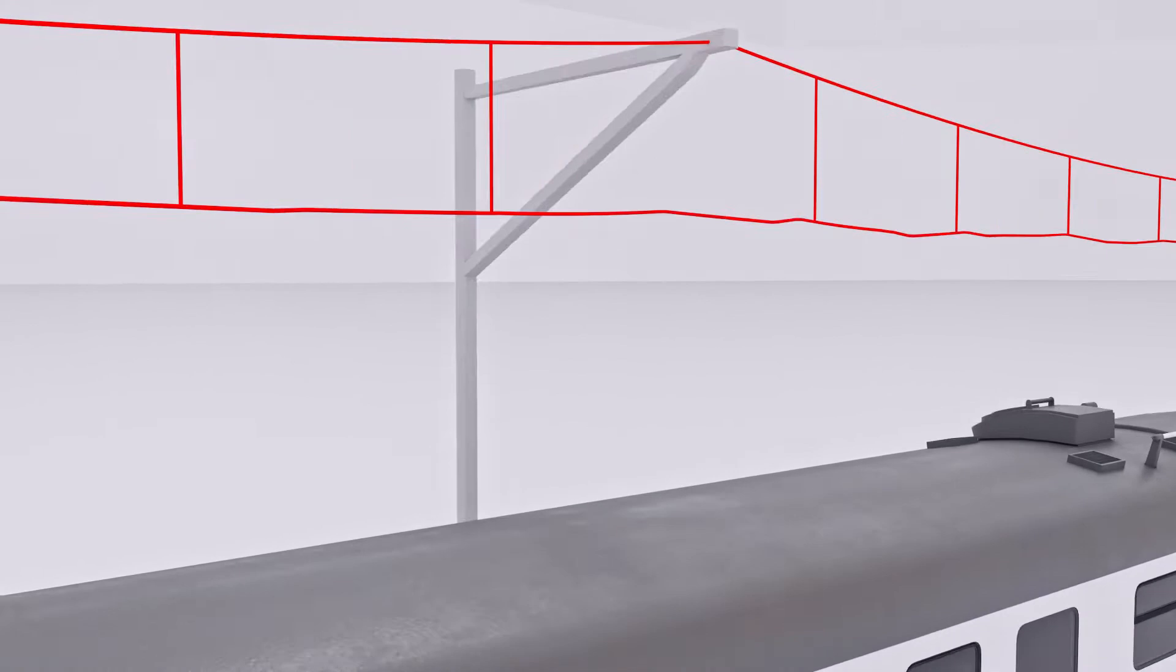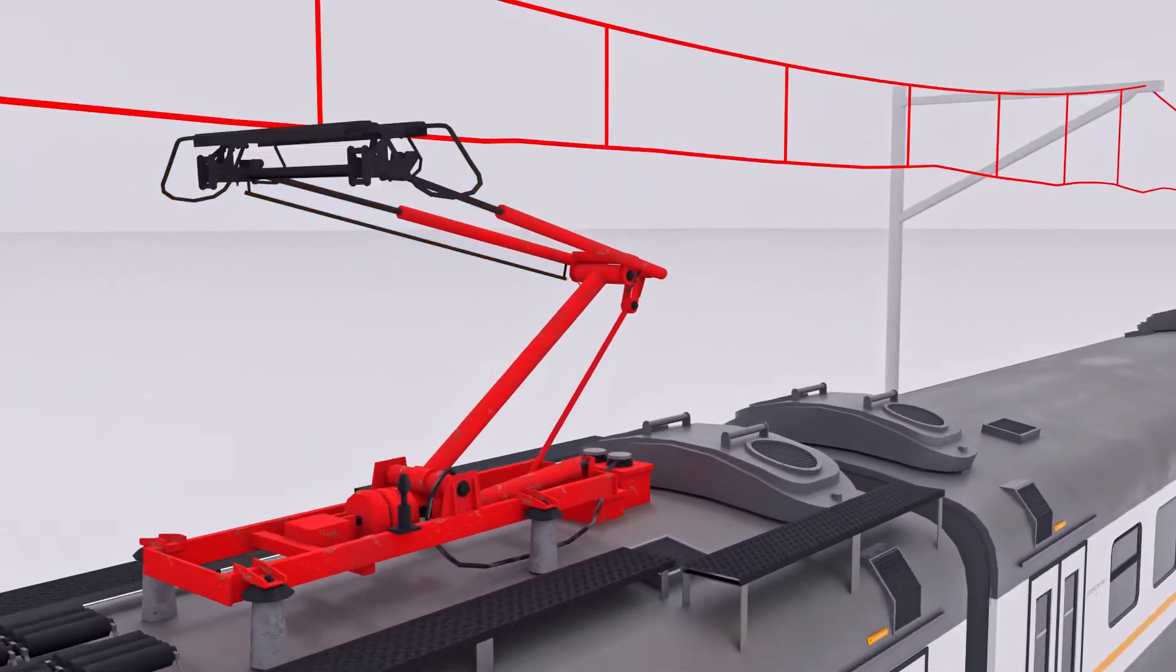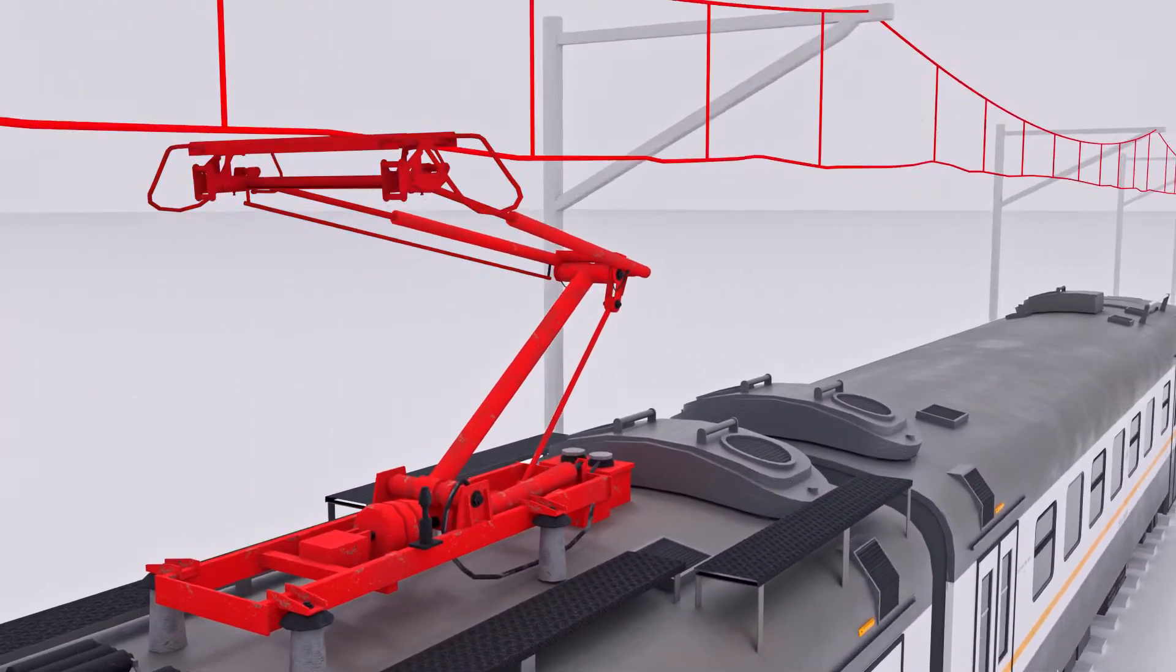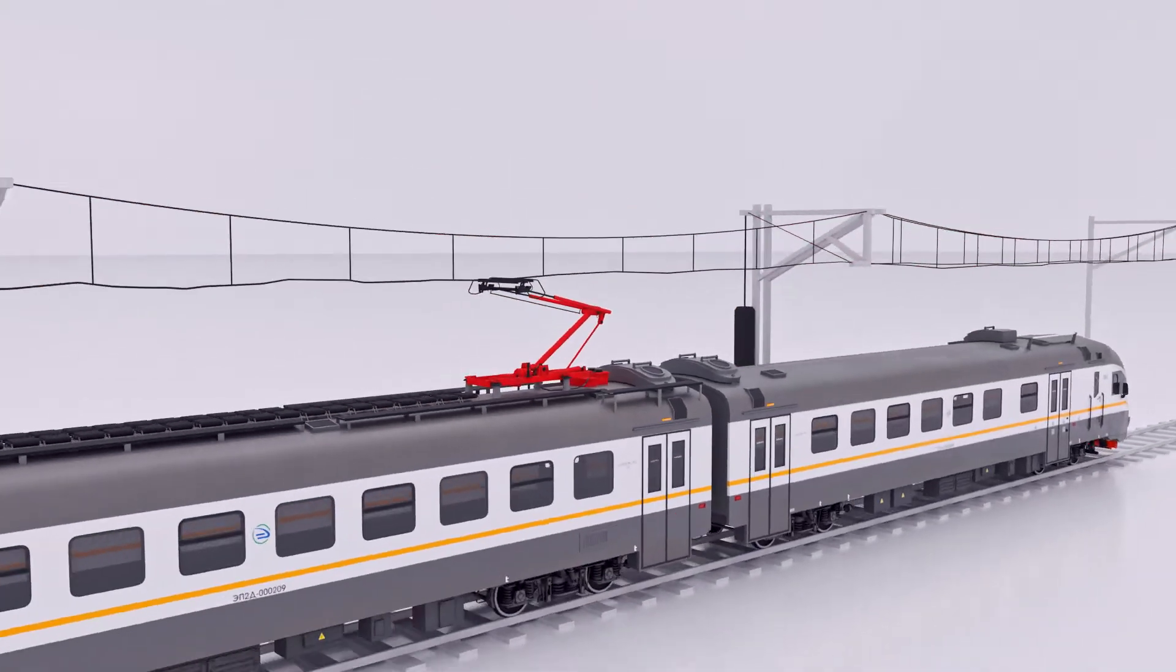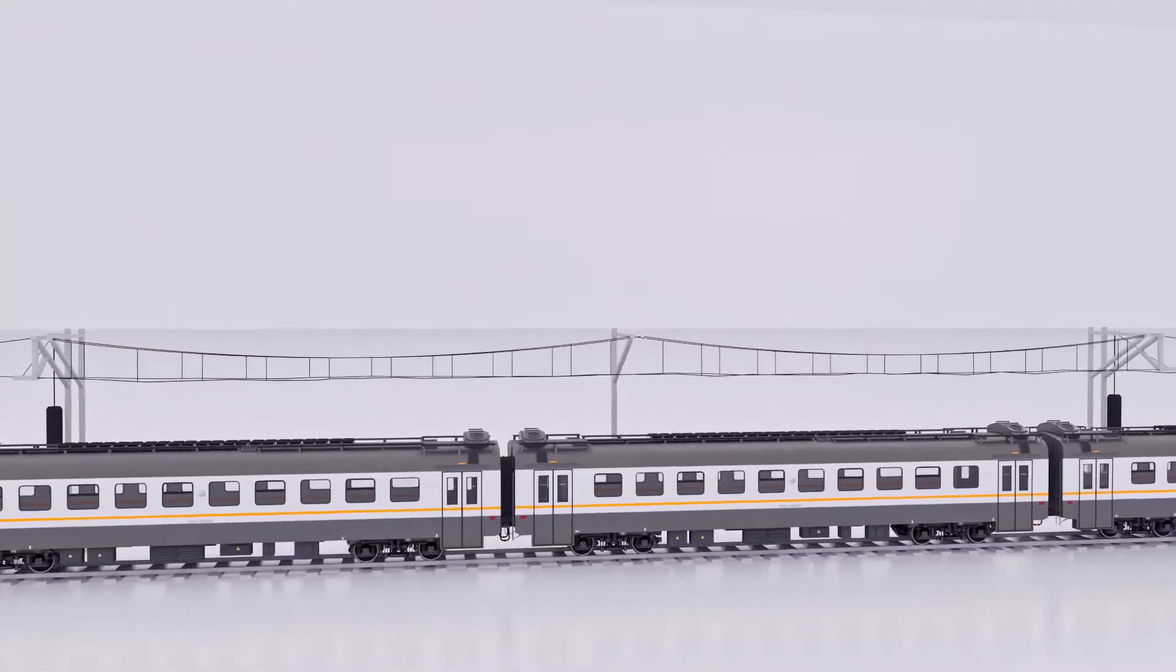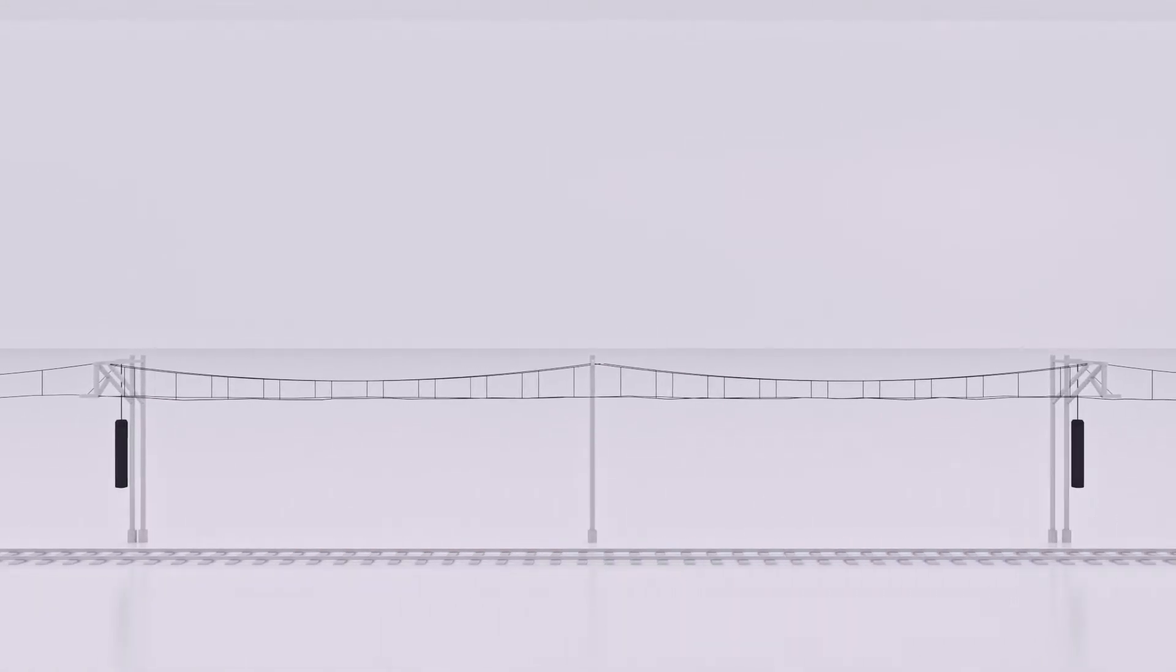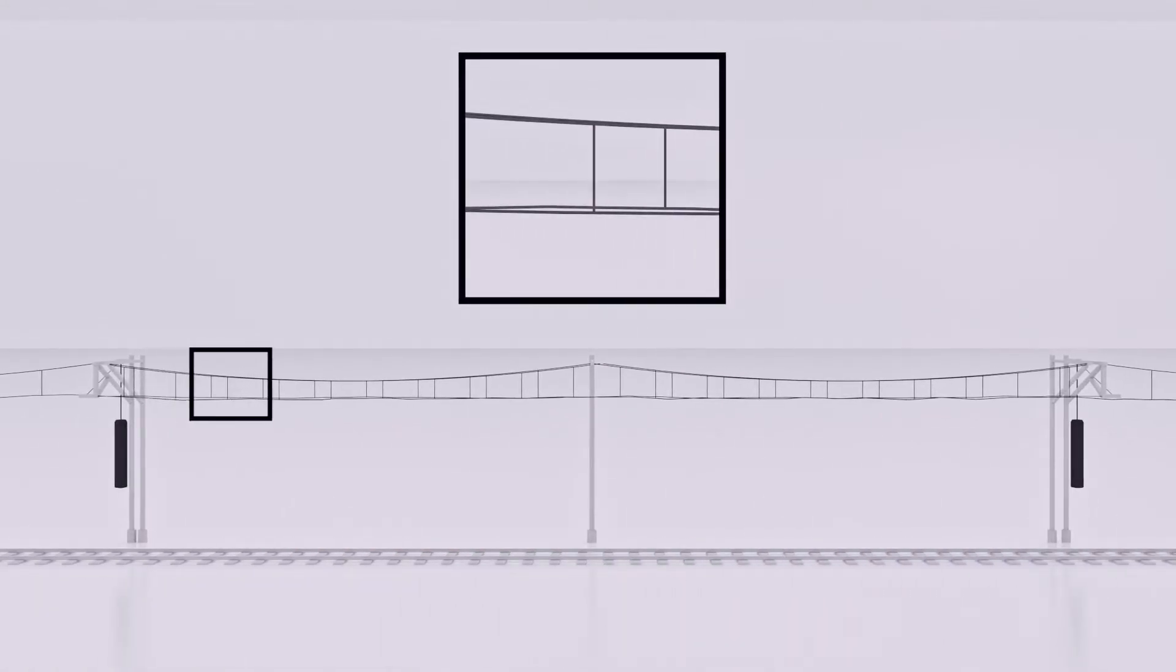This deformation at high speed will cause severe vibrations that might damage the pantograph and increase the wear rate of the equipment. In the overlap sections, these damages are more likely to occur because the transition of the connection point is not fully smooth.